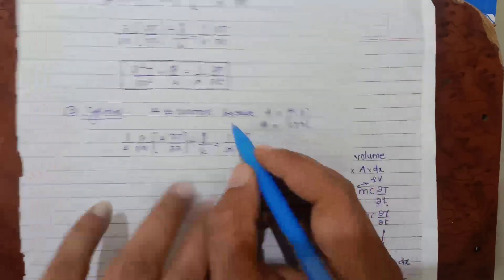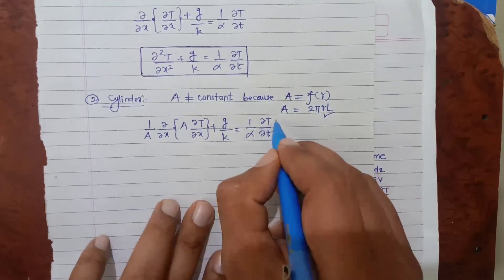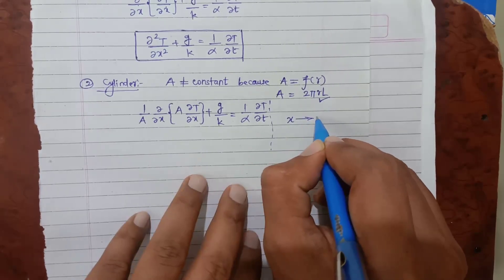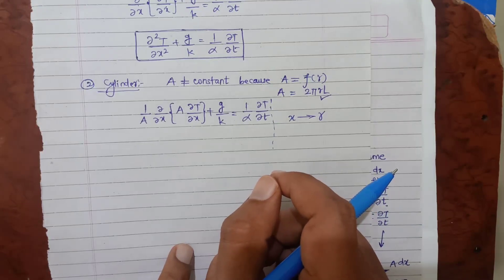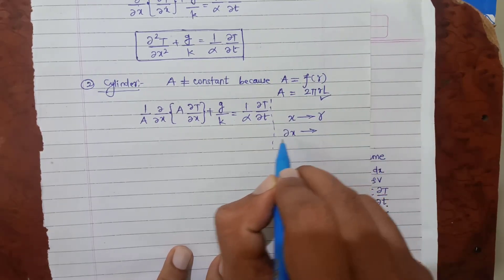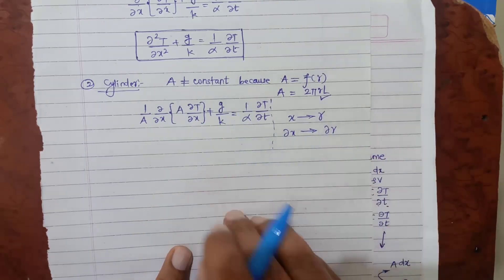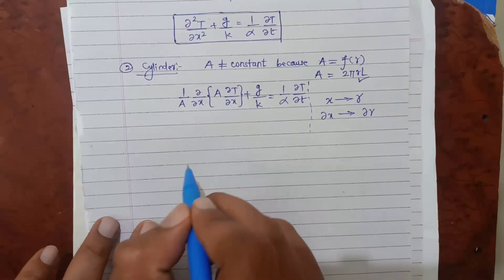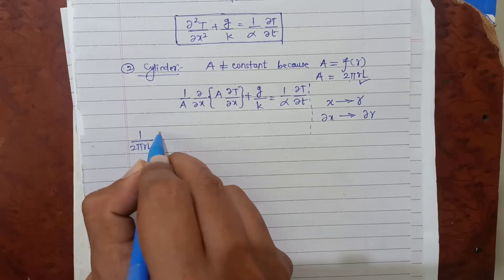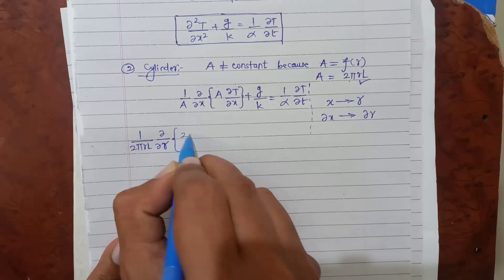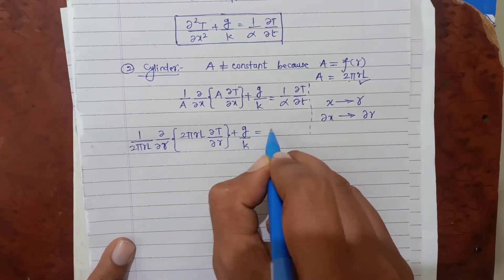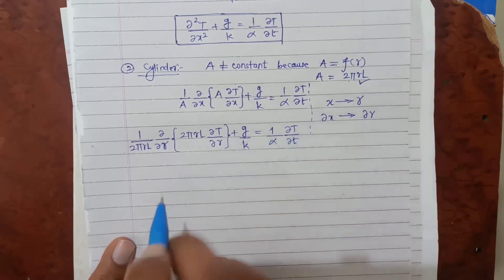We cannot cancel A outside and inside the bracket because now we have a variable to substitute. Substituting A = 2πrl and changing x to r, the equation becomes: 1/(2πrl) · ∂/∂r(2πrl · ∂T/∂r) + g/k = 1/α · ∂T/∂t. Now 2, π, and the length L of the cylinder are all constants — length does not change — so they can be absorbed and cancelled.